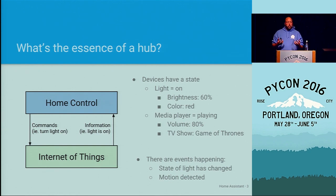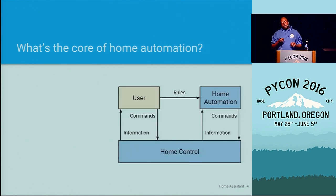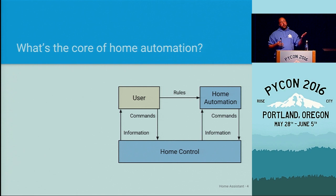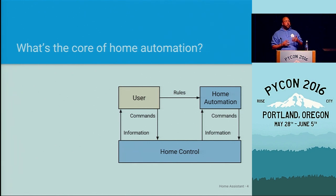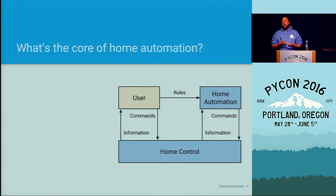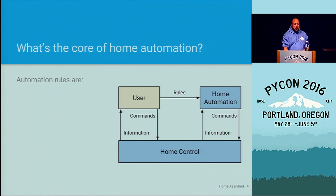This is the foundation of a hub — how you as a user can control your home. The user sees information from home control and can issue commands like turning the light on or setting the thermostat. But of course, this is also perfect to automate. If the user knows that when arriving home and the sun is down they want the lights to turn on, that's home automation.